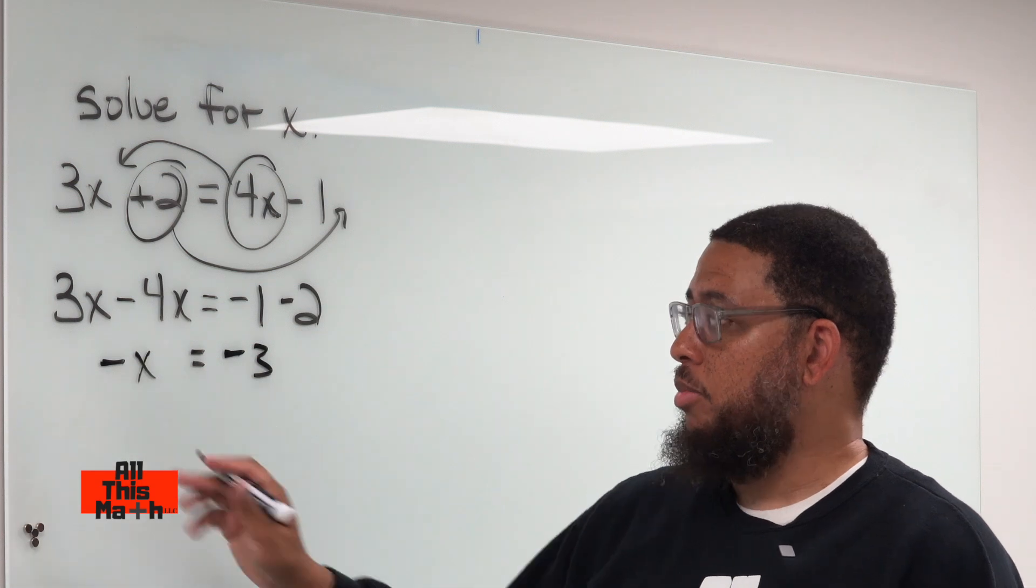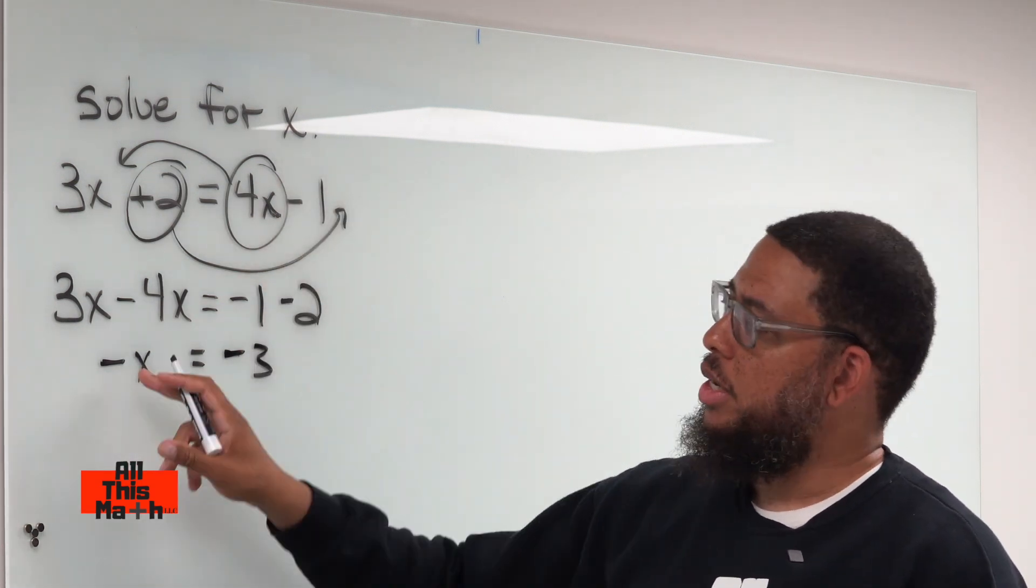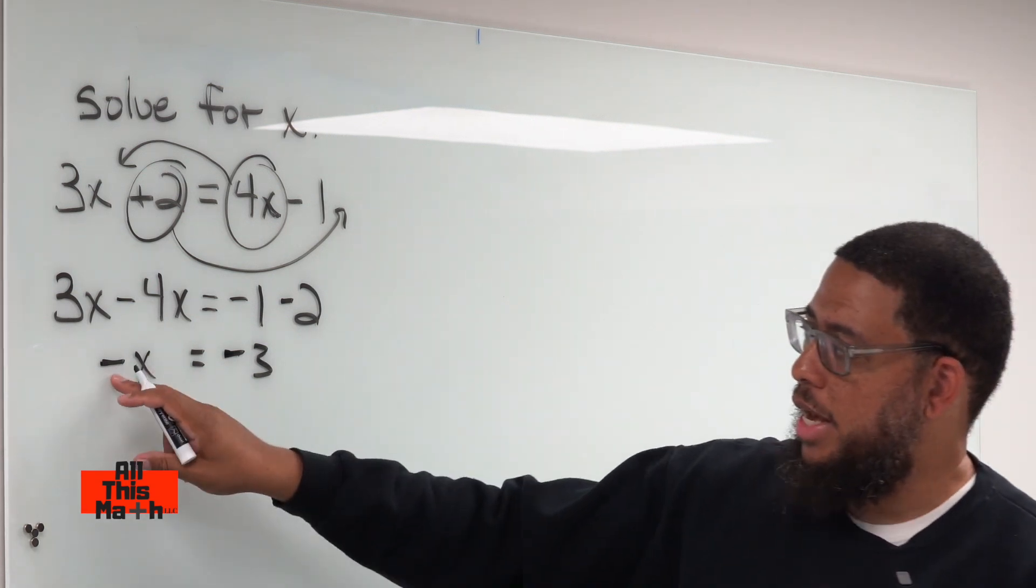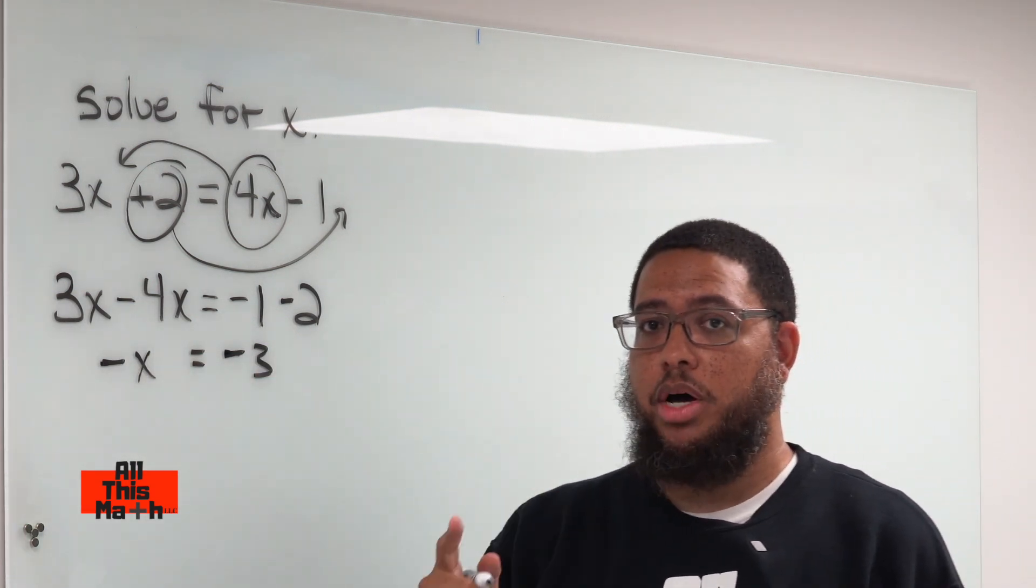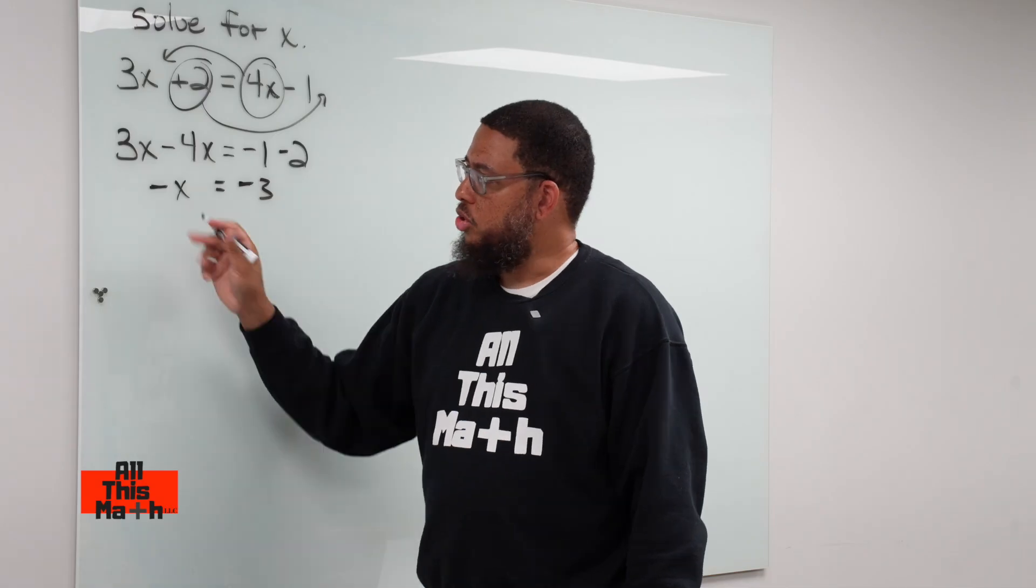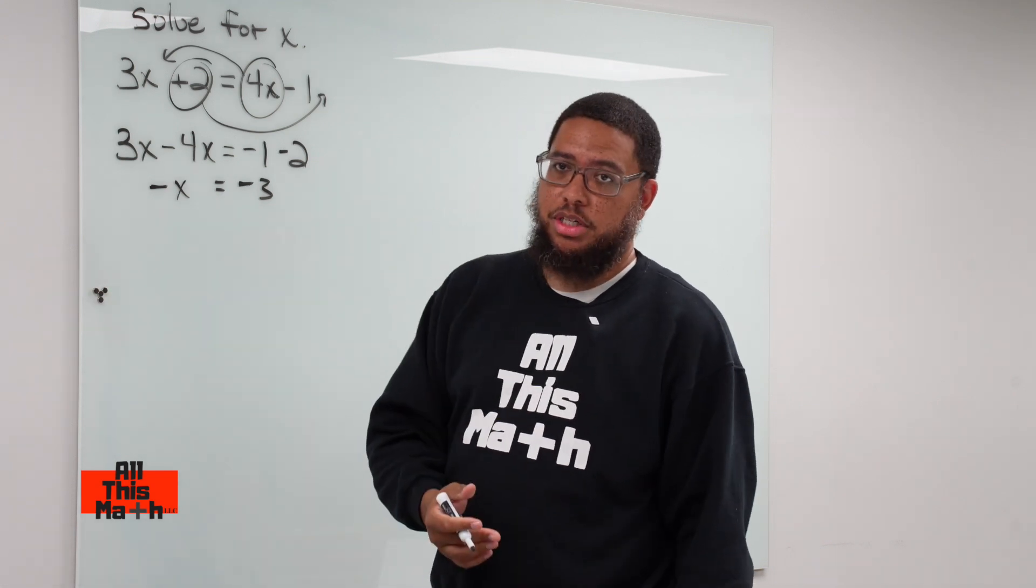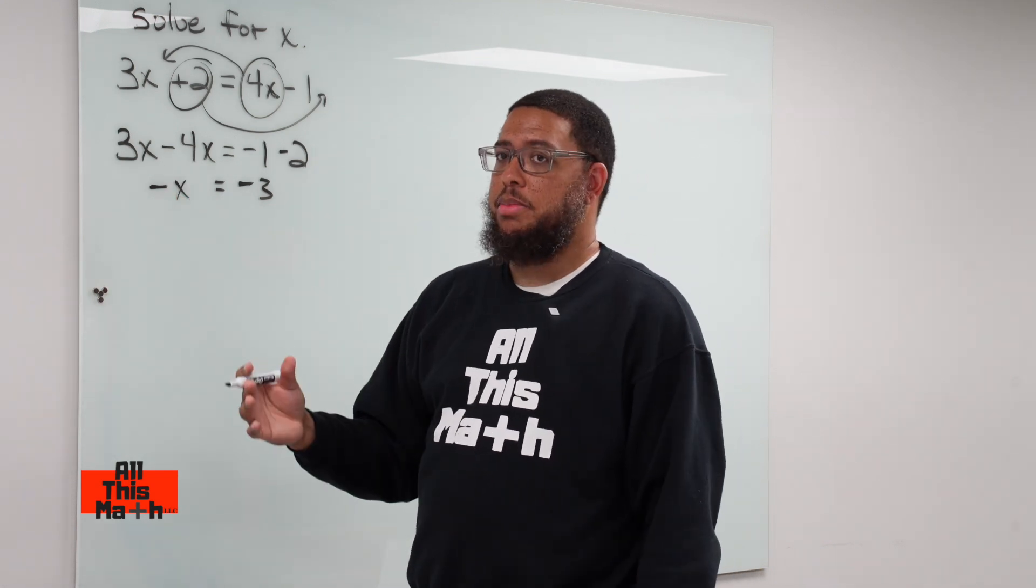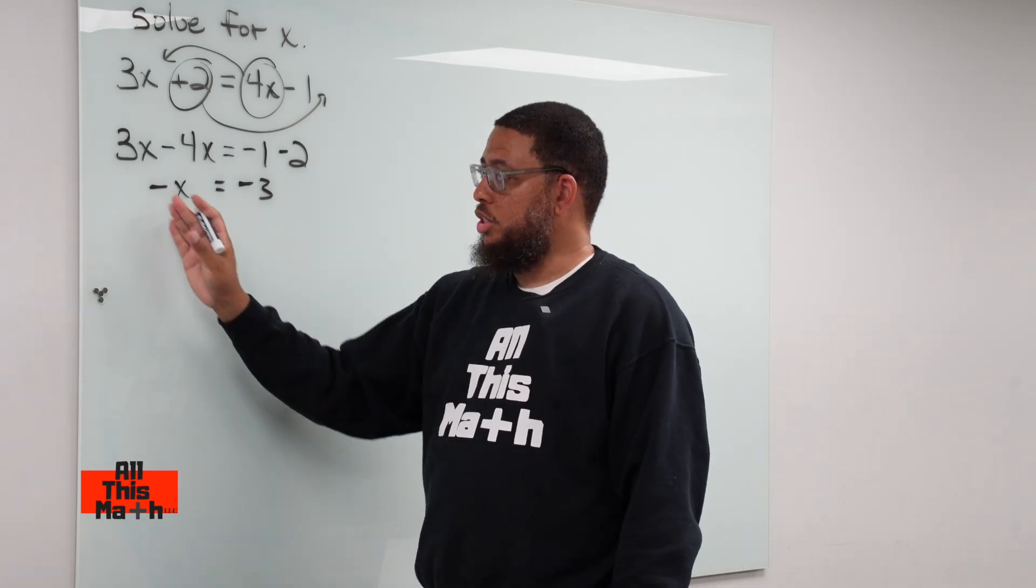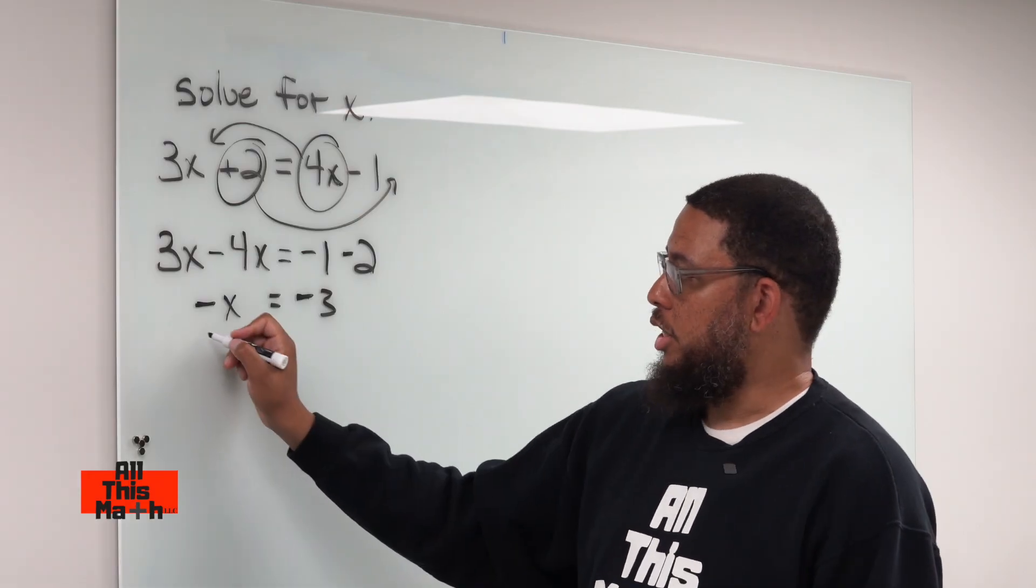We're almost done, because remember, we're not trying to solve for negative x. We're trying to solve for x, which is positive x. So how do we get rid of this negative sign? This negative sign actually represents a negative 1. Negative x really means negative 1x. So we need to get rid of this negative 1. In order to get rid of negative 1, we have to do the opposite operation. Negative 1x means that we're doing negative 1 times x. This represents multiplication. So the opposite of multiplying is dividing.